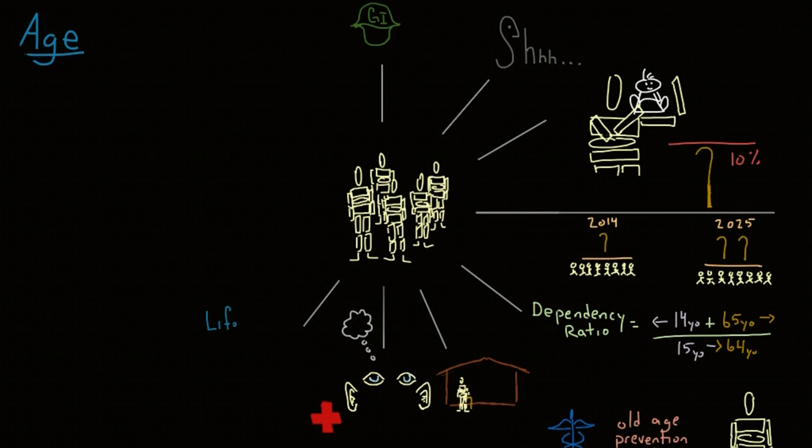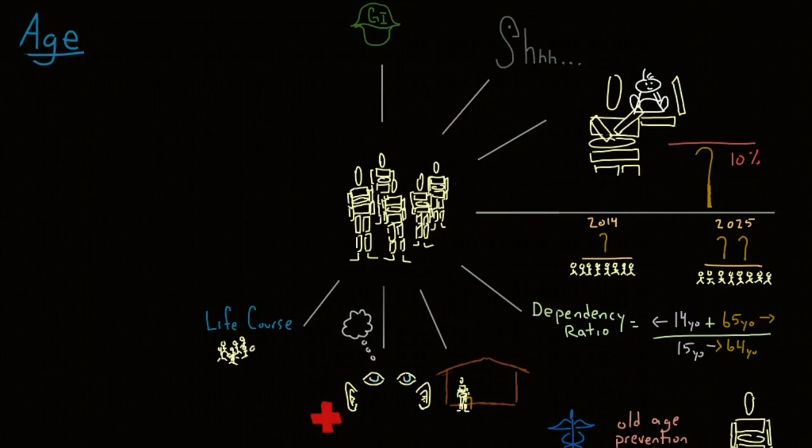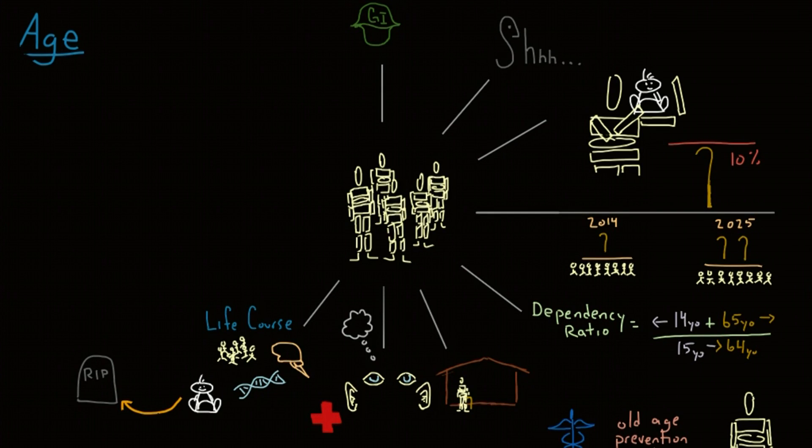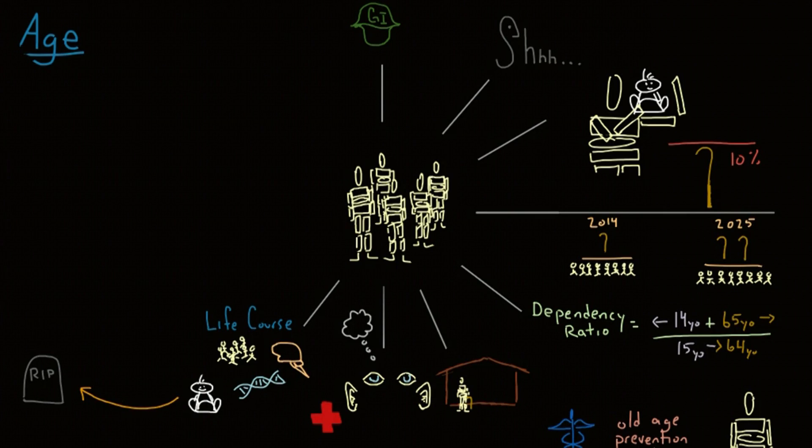If you look at the life course theory, aging is a social, psychological, and biological process that begins from the time you're born and continues until you die. The biological process has changed as people live longer, which has affected the social process.